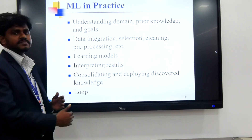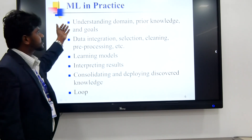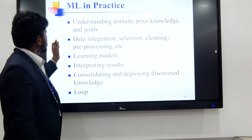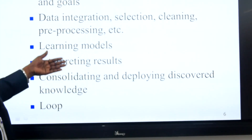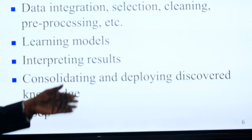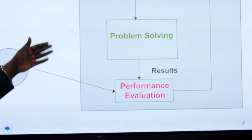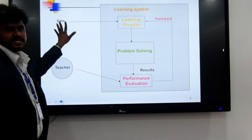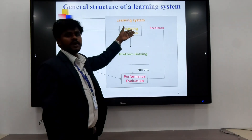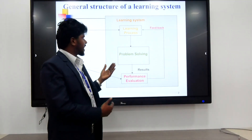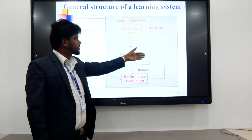The looping section: a circling process is called a loop, which is the cycling process. The loop includes domain understanding, data integration, and learning models. The looping process is called the cycling process. Pre-processing is called the learning process — that is problem solving. The machine learning algorithm is produced by the machine learning process.